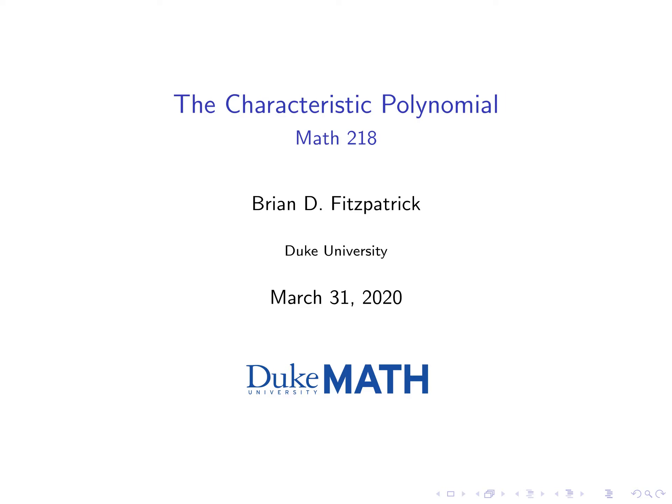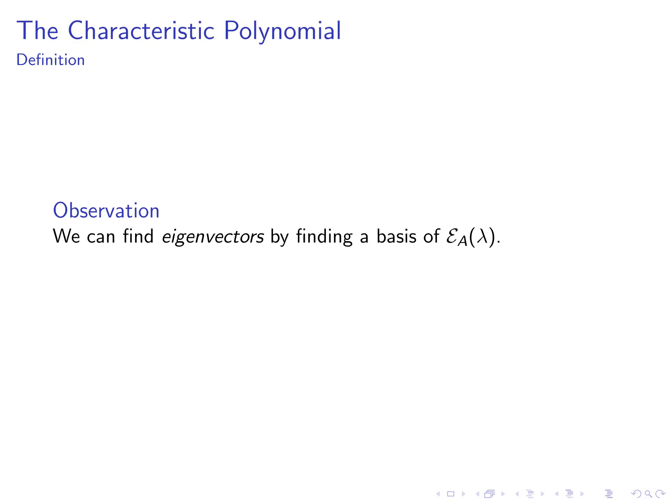Let's talk about the characteristic polynomial. So far, in every example we've done involving eigenvalues, we start by simply saying what the eigenvalues of the matrix we're interested in are. And once we know what the eigenvalues are, we know how to find eigenvectors.